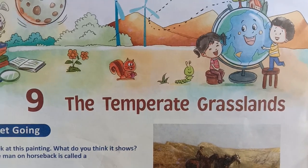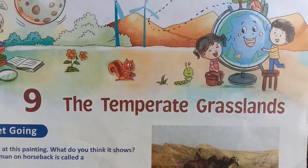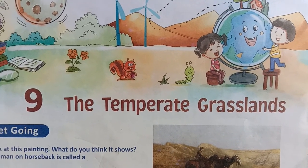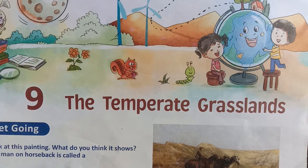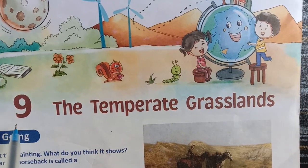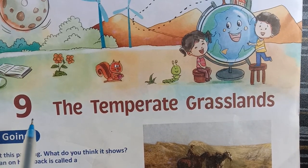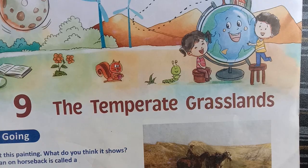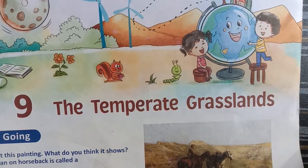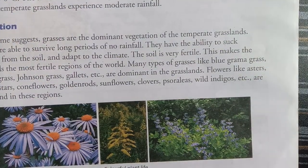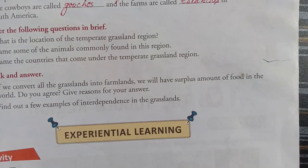Hello and welcome back to my channel. Today I will solve the question and answer of this lesson. The lesson name is 'The Temperate Grasslands,' Chapter 9 in the Social Studies book, Class 5. First of all, I will solve some questions in the book. Let's begin.